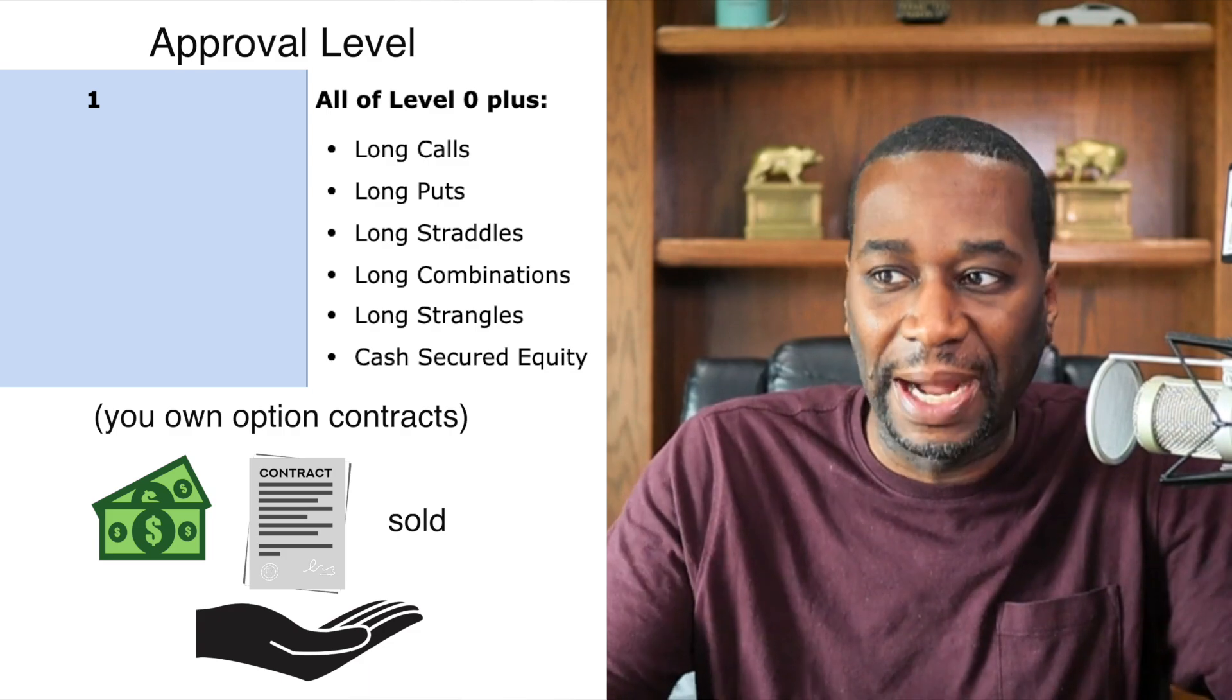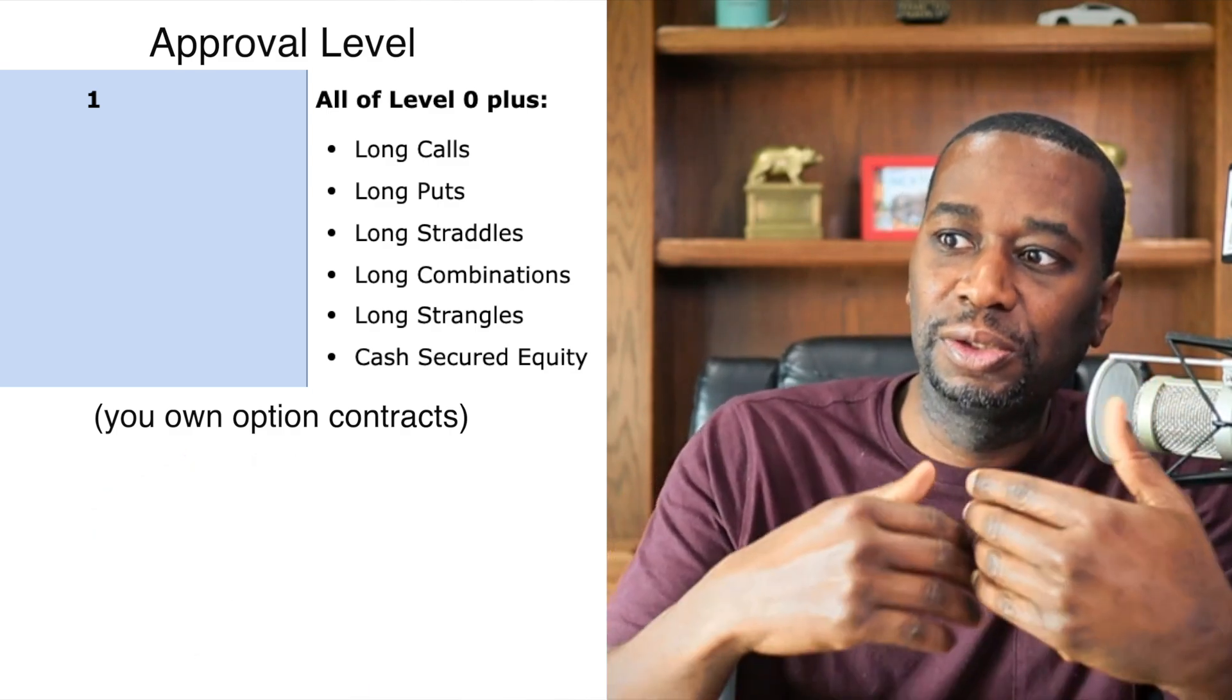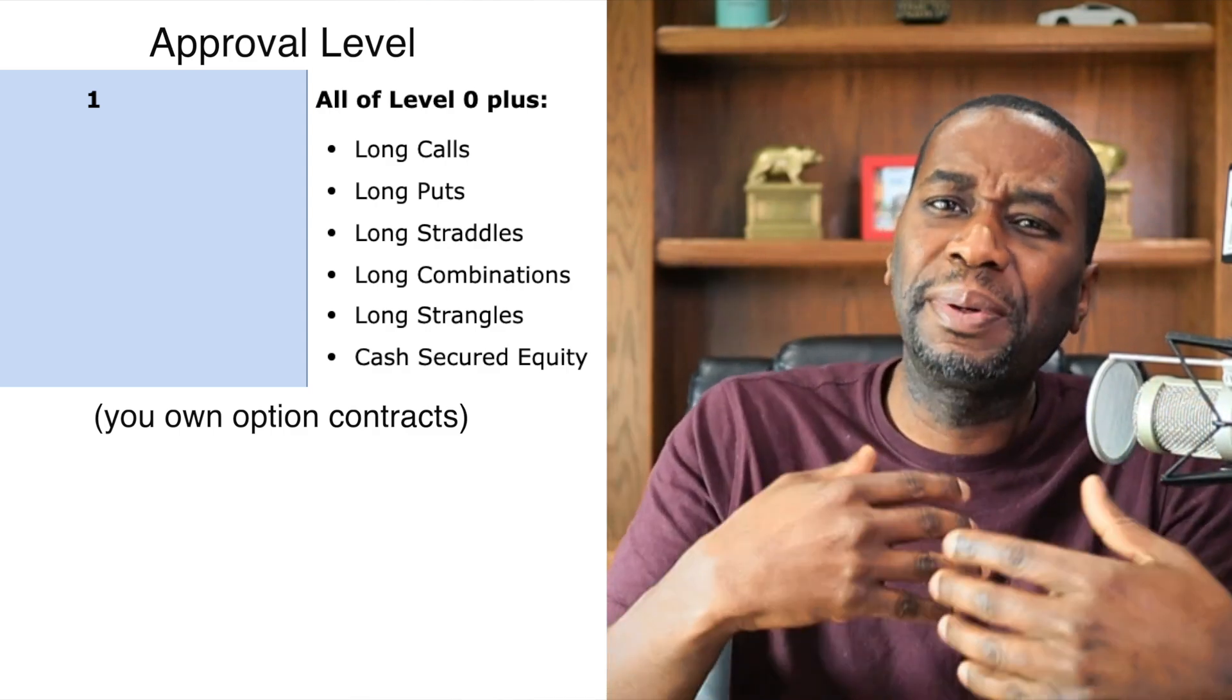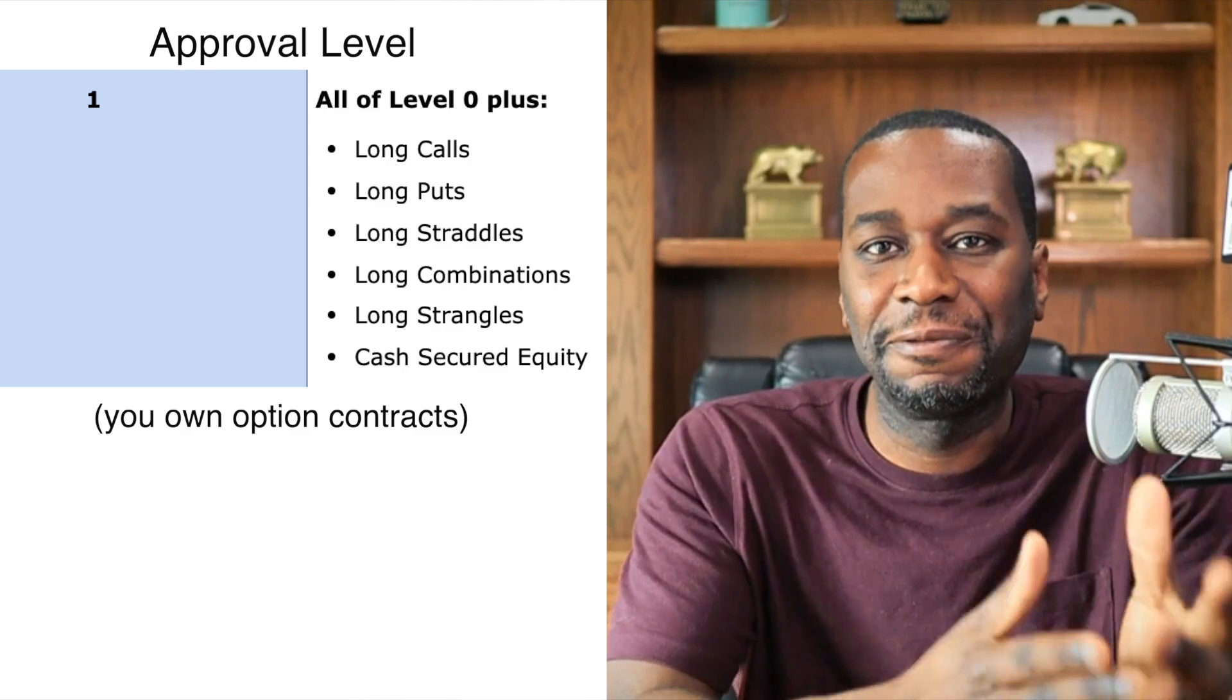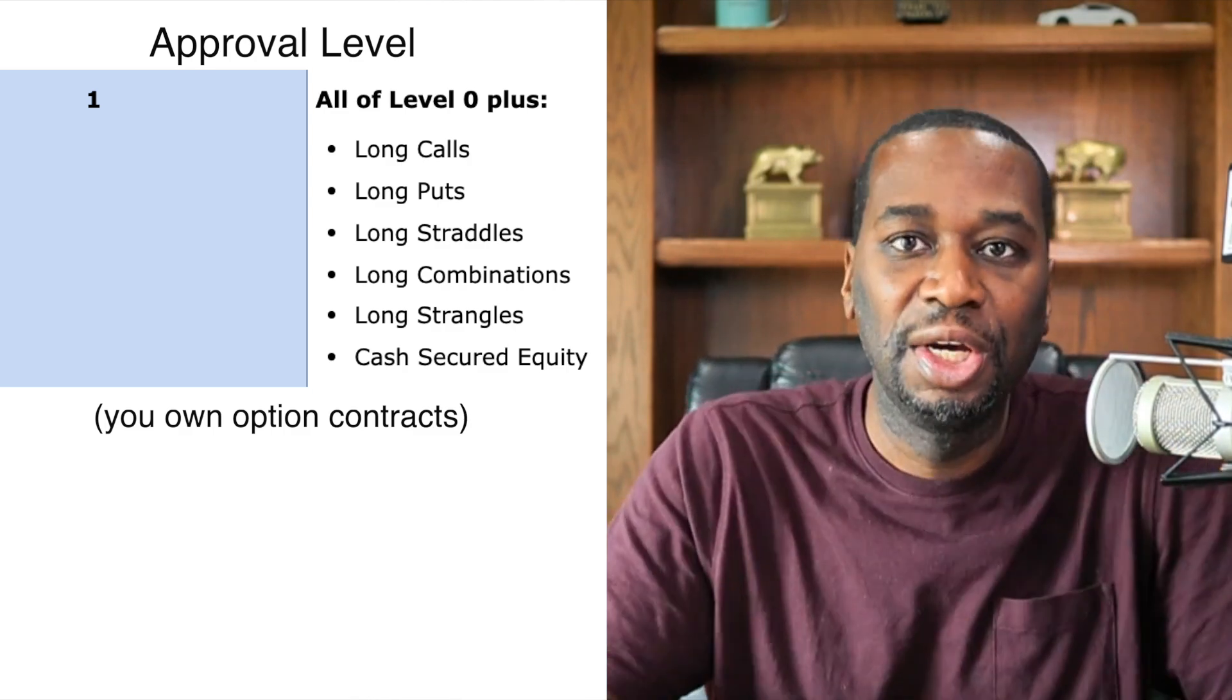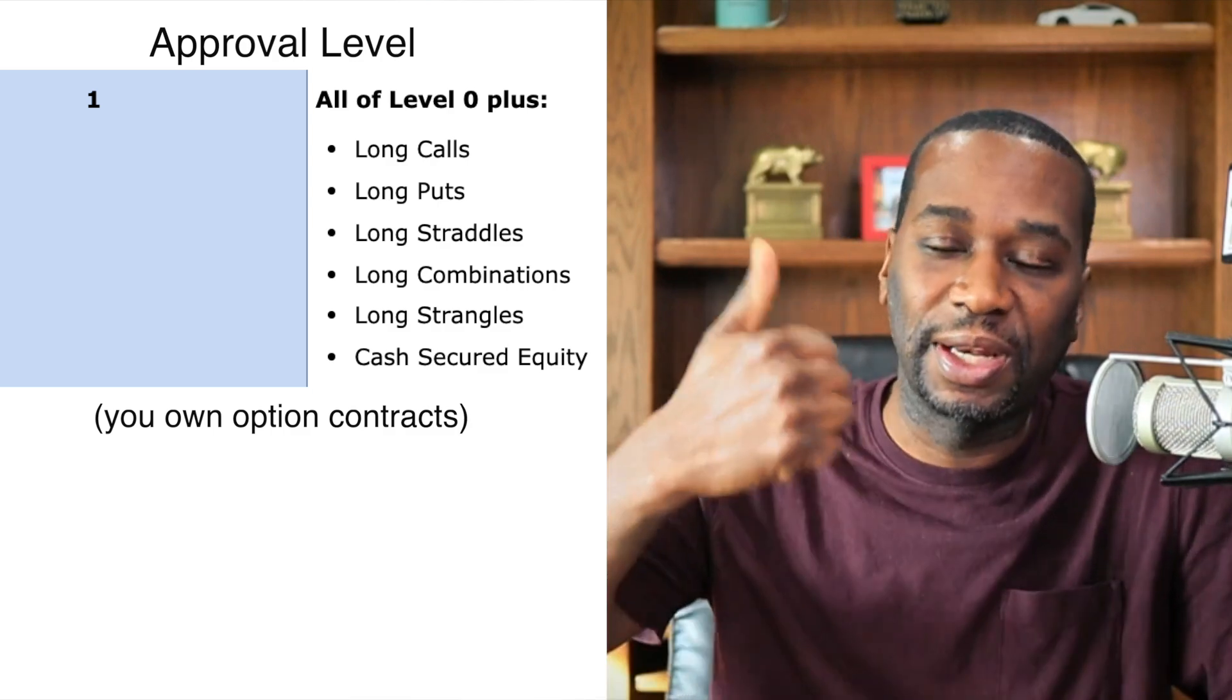Okay, so at level zero it's going to include, or level one is going to include everything from level zero, but it's going to allow you to do some things without physically actually owning stock. It's going to allow you to just trade options pretty much, directional options, whether that's bullish going up or directional bearish going down.